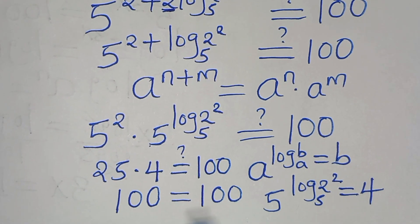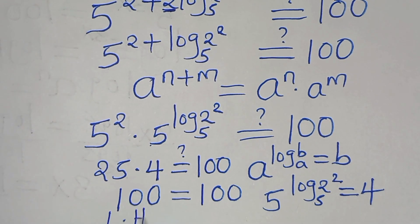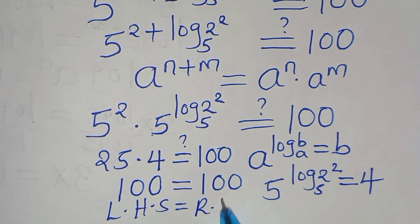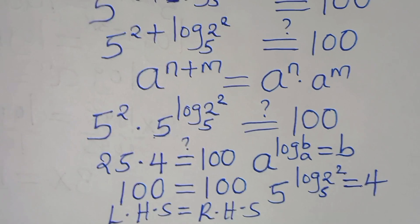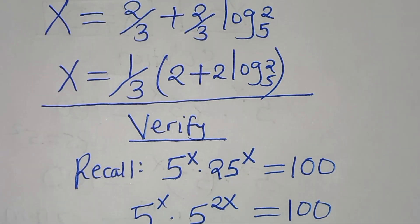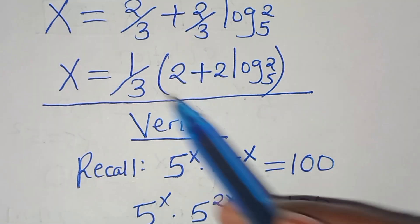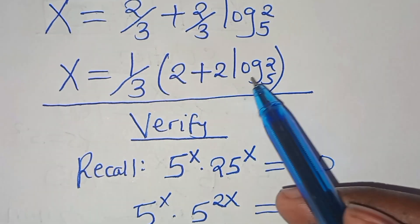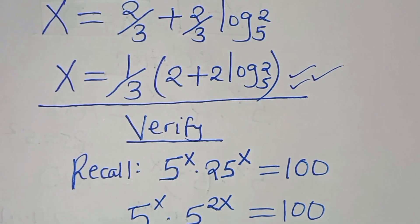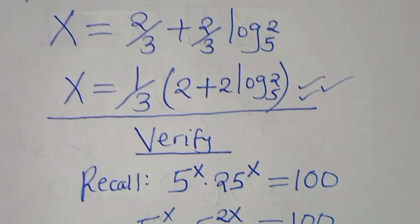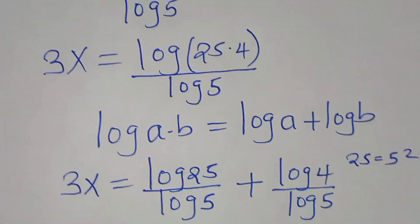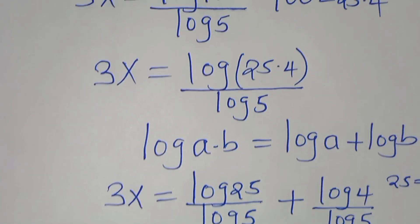This confirms that the left-hand side equals the right-hand side, and therefore x equals (1/3)(2 plus 2·log₅2) satisfies the equation. Like this video and subscribe. See you in the next video.